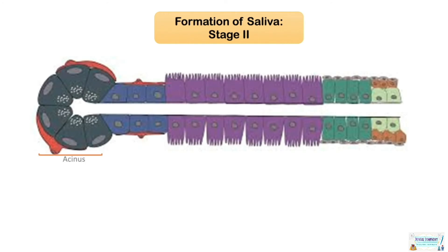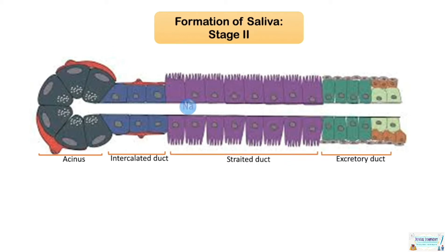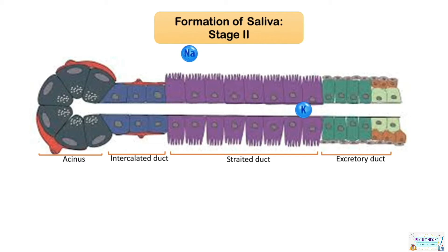Stage 2 of the salivary secretion process is the modification of the primary saliva by the duct system. The striated ducts are mainly responsible for the resorption of sodium and chloride and for the secretion of potassium and bicarbonate. Importantly, water is not resorbed here, which results in hypotonic saliva.